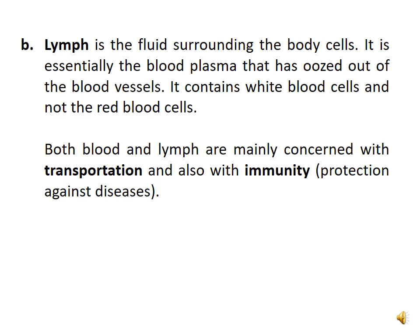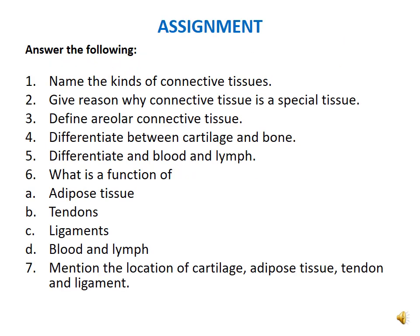Now we move on to the assignment. Write on an A4 sheet: name the kinds of connective tissues; give reasons why connective tissue is a special tissue; define areolar connective tissue; differentiate between cartilage and bone, and between blood and lymph; give the function of adipose tissue, tendons, ligaments, blood, and lymph; and mention the location of cartilage, adipose tissue, tendon, and ligaments.